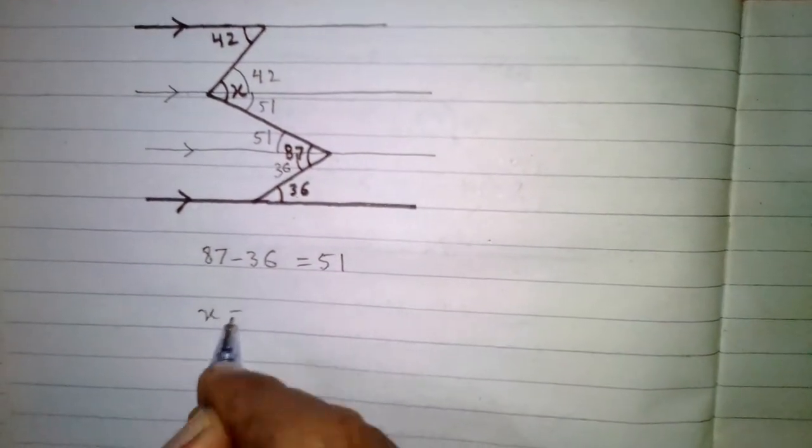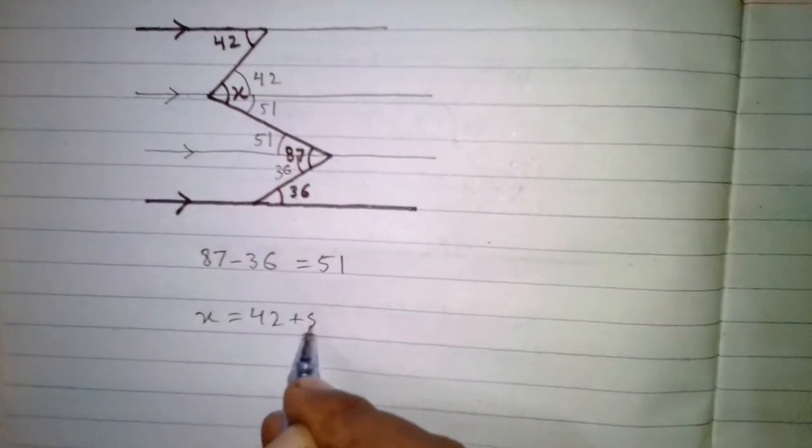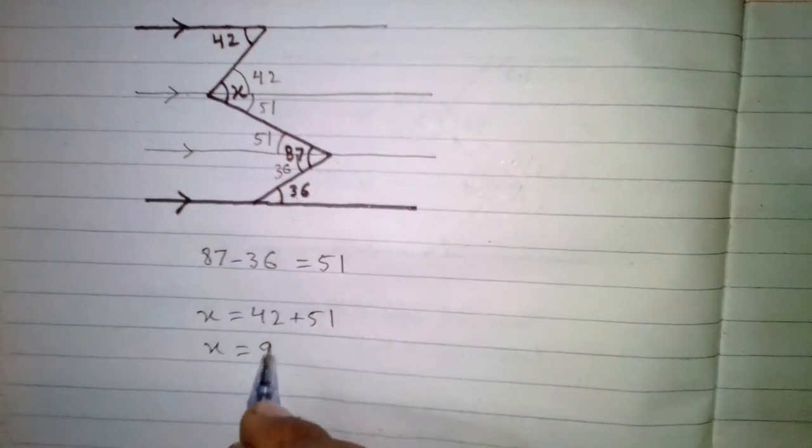So X is equal to 42 plus 51, so the value of X is 93.